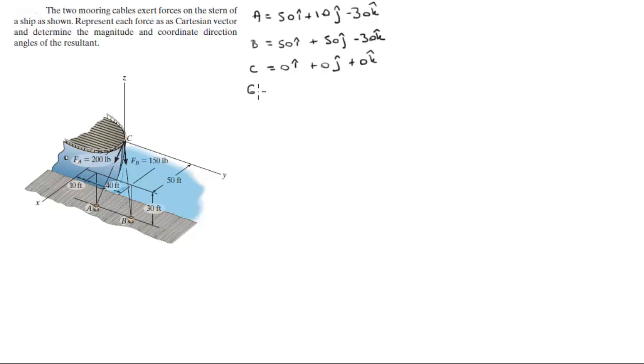So vector CA is equal to AX minus CX i—remember the second one, the destination of the vector, is always the first one over here—plus AY minus CY j plus AC minus CC k.